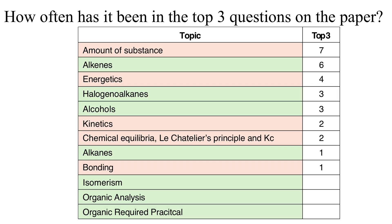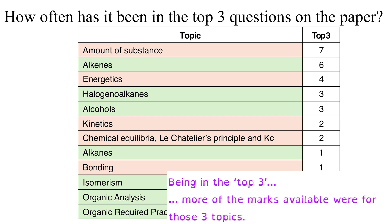Every year some topics carry more marks than others and so I've looked at each year and allocated a top three for the most important topics in any given year. And so then I've looked at which topics are in the big three on more occasions than others. And you can see that the Amount of Substance topic has been in the top three seven times out of nine.